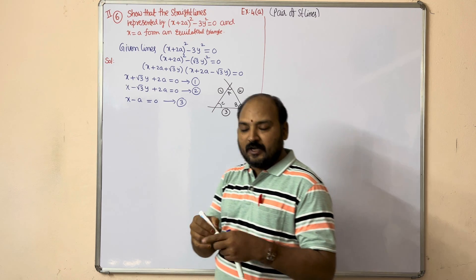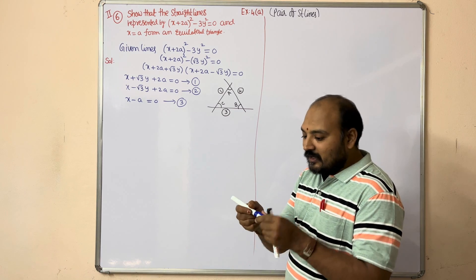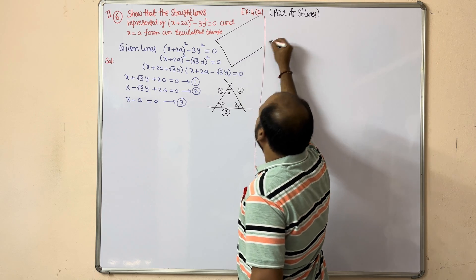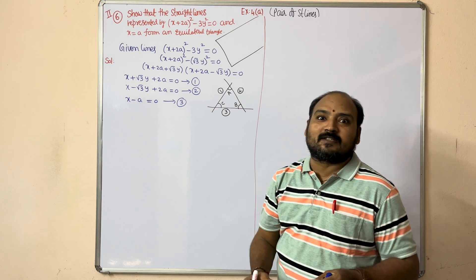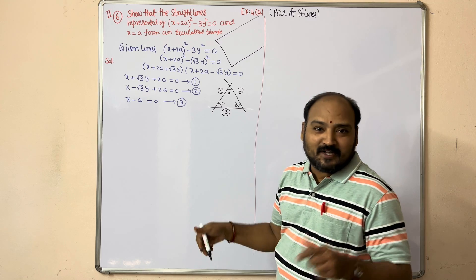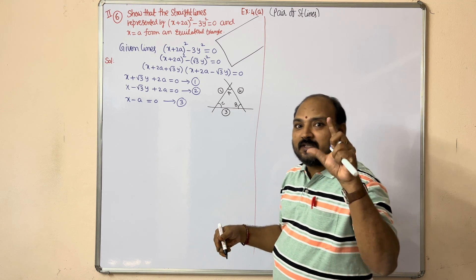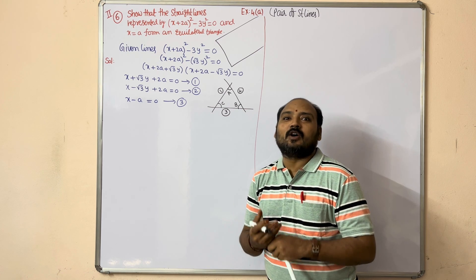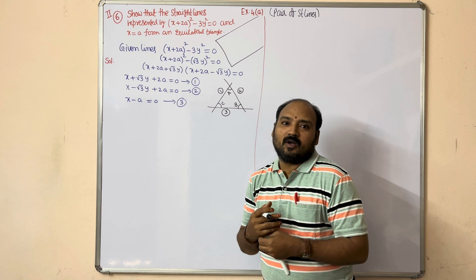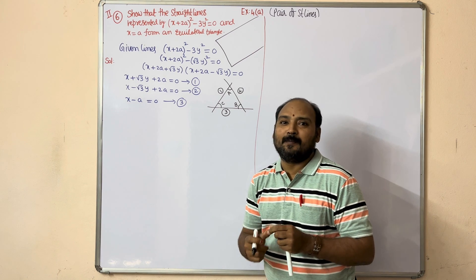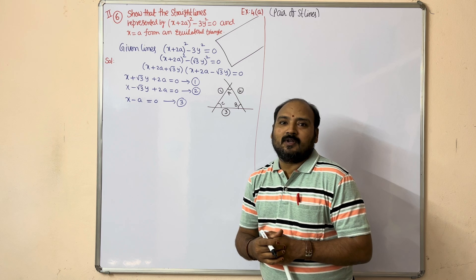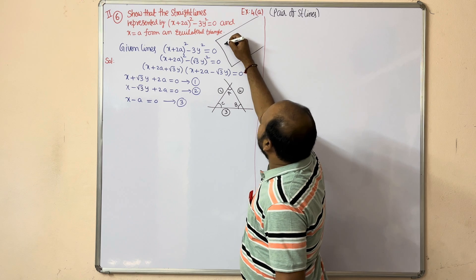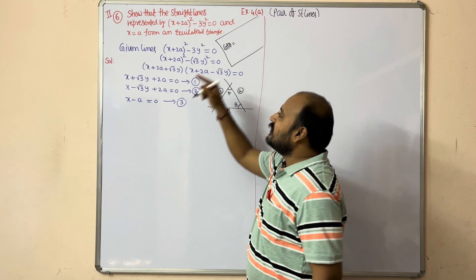Here, first find the angle between them. From earlier classes we learned the cos θ formula from the straight lines concept. The complete playlist of straight lines is available on our channel with 14 videos. Now, the cos θ formula: if the lines are compared with a₁x + b₁y + c₁ and a₂x + b₂y + c₂, then cos θ equals...